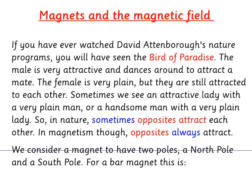This one is called Magnets and the Magnetic Field. If you've ever watched David Attenborough's nature programs, you'll have seen the Bird of Paradise. The male is very attractive and dances around to attract a mate. The female is very plain, but they are still attracted to each other. Sometimes we see an attractive lady with a very plain man, or a handsome man with a very plain lady. So in nature, sometimes opposites attract each other. In magnetism though, opposites always attract.